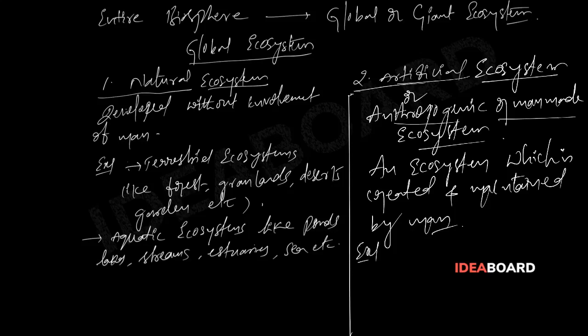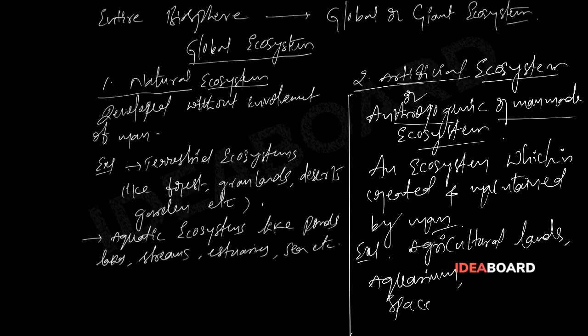For manmade or anthropogenic ecosystem, examples are agricultural lands, aquarium, and even spacecraft. The giant or the largest manmade ecosystem is agro-ecosystem.